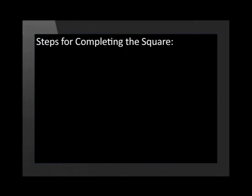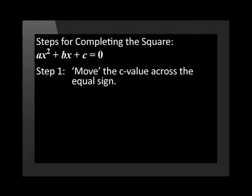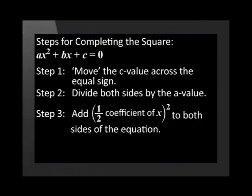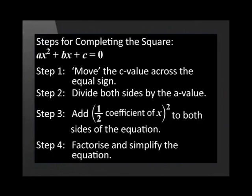Let's revise the steps to complete the square. Refer to the standard form ax squared plus bx plus c equals 0. Step 1: Move the c value across the equal sign. Step 2: Divide both sides by the a value. Step 3: Add half the coefficient of x squared to both sides of the equation. Step 4: Factorize and simplify the equation.